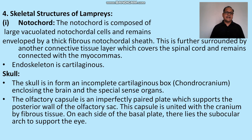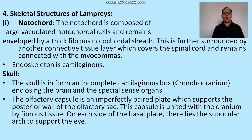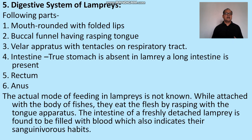Skeletal structure: the notochord is present, composed of large vacuolated notochordal cells, and remains enveloped by a thick fibrous notochordal sheath. The endoskeleton is cartilaginous. The skull is in the form of an incomplete cartilaginous box called the chondrocranium, which surrounds and encloses the brain and special sense organs. The olfactory capsule is an imperfect perforated plate supporting the posterior wall of the olfactory sac, united with the cranium by fibrous tissue. On each side a subocular arch supports the eyes.